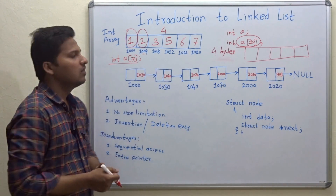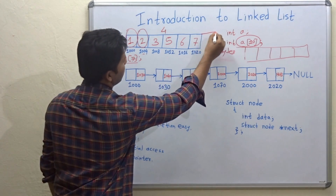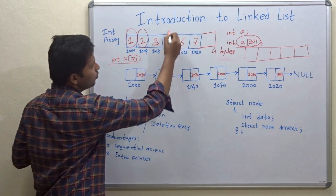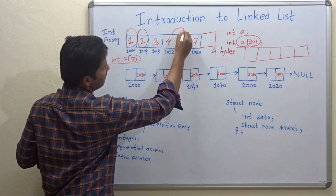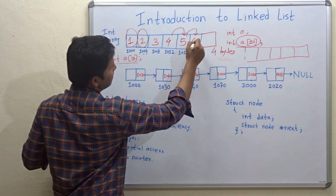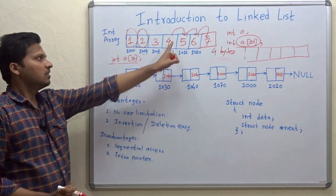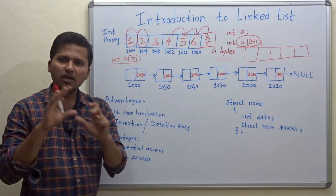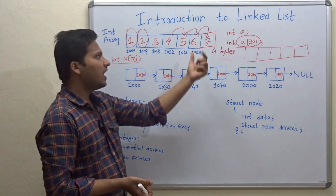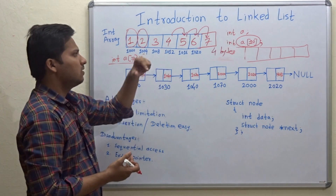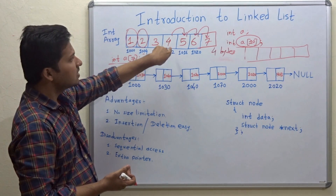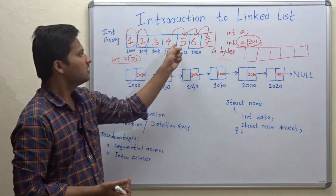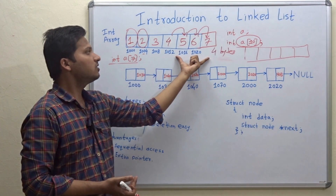Even if we re-declare the array and increase the size by one location, we still have to place 4 and rearrange: 5 is shifted by one place, then 6, then 7. All these shifts must take place. So the disadvantage of an array is that at runtime you cannot increase the size, and you cannot insert an element with only one memory access — you have to access all the memory locations after the insertion point.